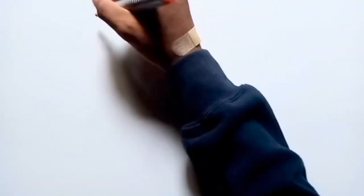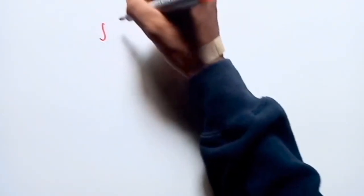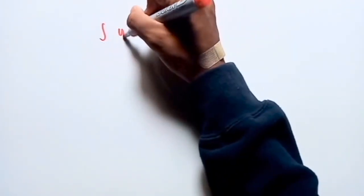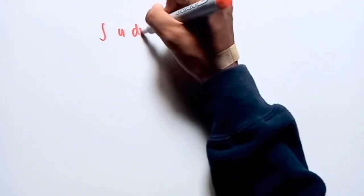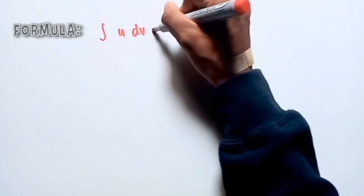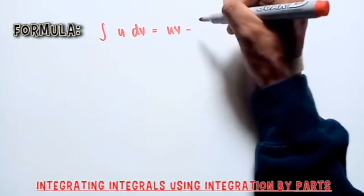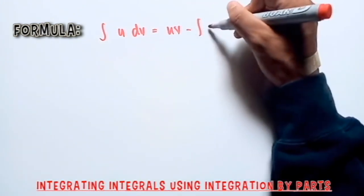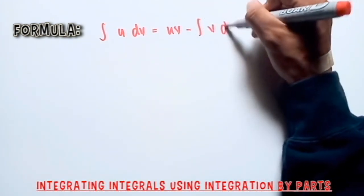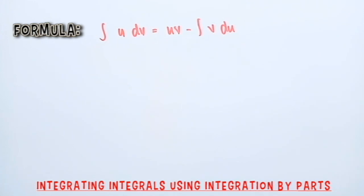The formula is: the integral of U dv is equal to Uv minus the integral of V du. This formula is derived from the differential of a product.